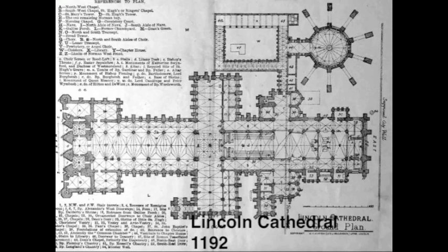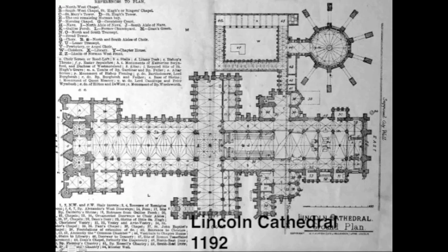You could have a double transept in French Gothic, but it's more likely to happen in English Gothic. You're also very likely to have a cloister with an English Gothic church. In early Christian, Romanesque, and French Gothic you traditionally have a rounded apse — and here, it's straight. The whole plan seems governed by a highly organized disposition of orthogonal lines and right angles. You also get this very dramatic lady chapel, something you find much more frequently in English Gothic than in French, Italian, or other versions of Gothic.